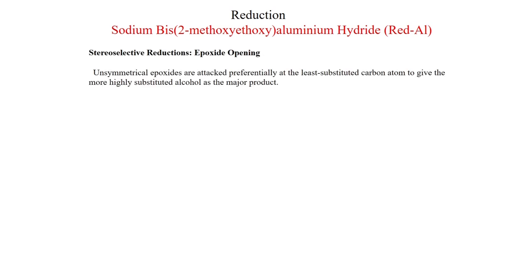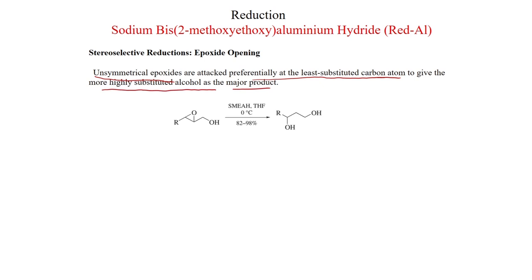An important reaction of Red-Al is stereoselective epoxide opening. Unsymmetrical epoxides are attacked preferentially at the least hindered or least substituted carbon atom to give the more substituted alcohol as the major product. For example, a 2,3-epoxy alcohol treated with SMEAH in THF at 0°C gives a 1,3-diol product via C2 opening.